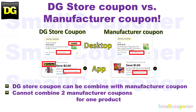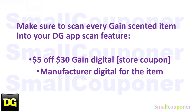This is the difference between a store coupon and a manufacturer coupon. At Dollar General, you can combine a store coupon with a manufacturer coupon, but you cannot combine two manufacturer coupons — whether it be a digital, an insert paper, or a printable coupon — for one product. Make sure that you scan every Gain-scented item in your cart into the app just to make sure that the $5.30 Gain store coupon and the manufacturer digital coupon are both attaching or showing up for the item.